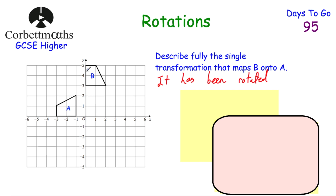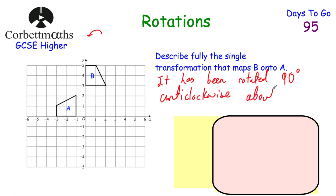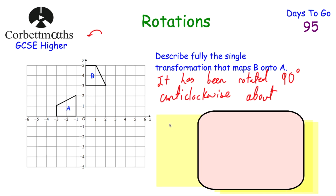Now let's say how many degrees. To go from B to A, you can see it's been rotated 90 degrees because the vertical line has become the base. Going from B to A, that direction is anti-clockwise. So it's been rotated 90 degrees anti-clockwise. We've got a good start — now we need one more thing: the centre of rotation. One approach I'd typically use for GCSE questions is trial and error: get tracing paper, draw over B, try different points, and rotate 90 degrees anti-clockwise until it lands on A.